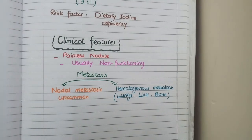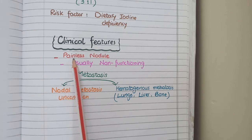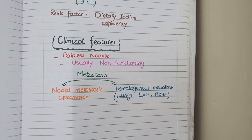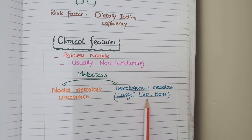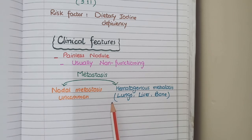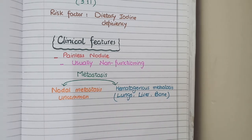Like all thyroid neoplasms, follicular carcinoma is painless and non-functioning. A unique feature distinguishing it from papillary carcinoma is that it does not show lymph nodal metastasis. Instead, it causes hematogenous metastasis into the liver, lungs, and bone. This gives follicular carcinoma a worse prognosis than papillary carcinoma, since papillary carcinoma shows nodal metastasis but not hematogenous spread.